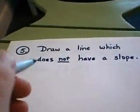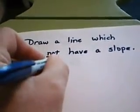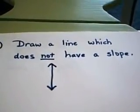The only kind of line left to draw would be a perfectly vertical line. A vertical line, any vertical line, does not have a slope.